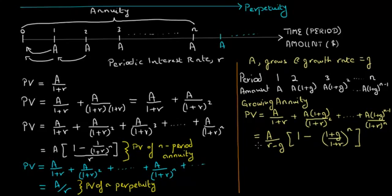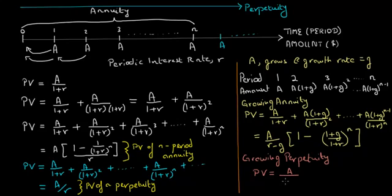Now what if this stream of growing payments has an infinite life — in other words, it's a growing perpetuity? In that case, the present value equals A divided by (R minus G). This is the present value of a growing perpetuity. This result is very useful in valuing equities, and we make use of it when discussing the Gordon Growth Model for stock valuation.